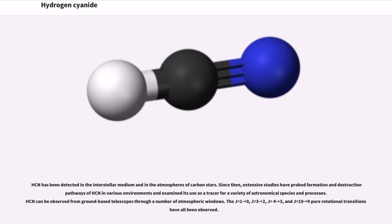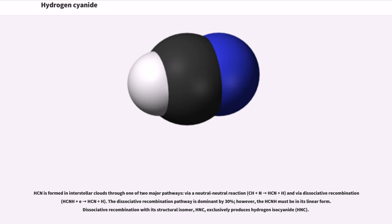HCN has been detected in the interstellar medium and in the atmospheres of carbon stars. Since then, extensive studies have probed formation and destruction pathways of HCN in various environments and examined its use as a tracer for a variety of astronomical species and processes. HCN can be observed from ground-based telescopes through a number of atmospheric windows. The J=1-0, J=3-2, J=4-3, and J=10-9 pure rotational transitions have all been observed.